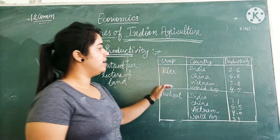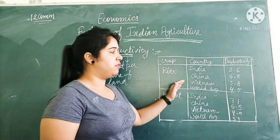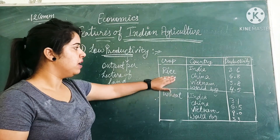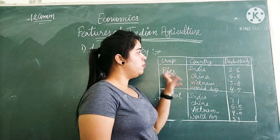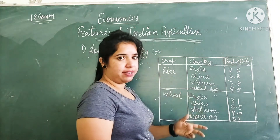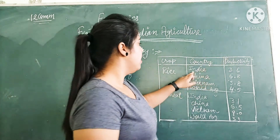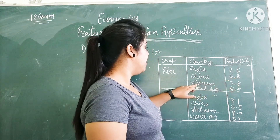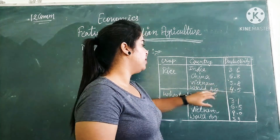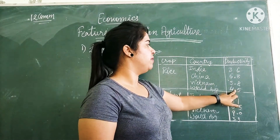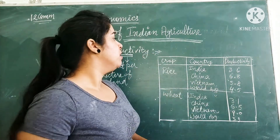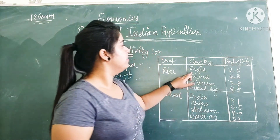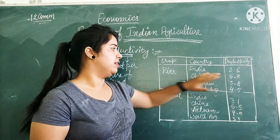Here is a comparison of different countries. Crops can be many; we have taken two — rice and wheat. The output of rice in India per hectare of land is 3.6, while in China it is 6.8, in Vietnam it is 5.8, and the world average is 4.5. As compared to these figures, Indian productivity is much less than other countries.